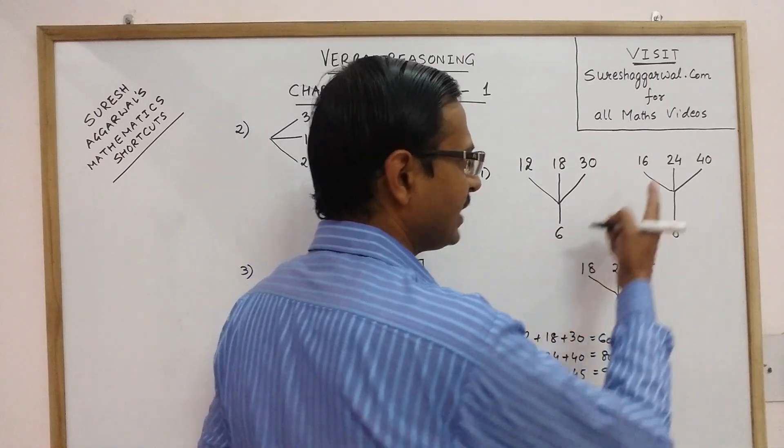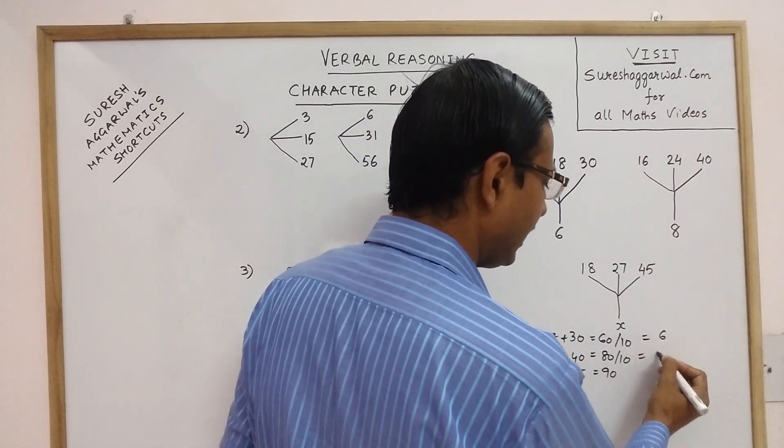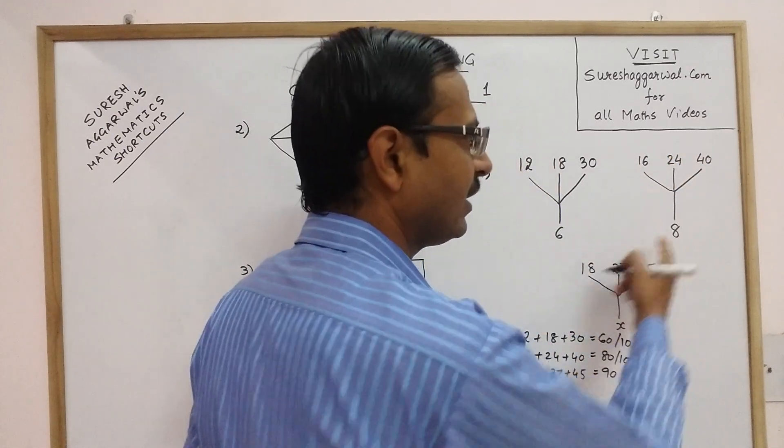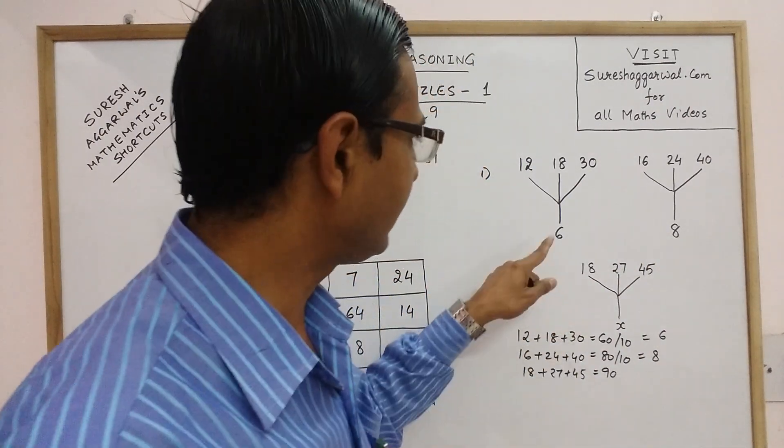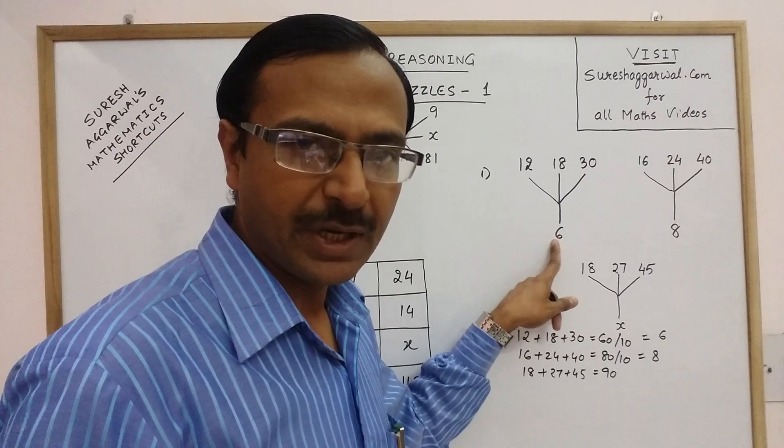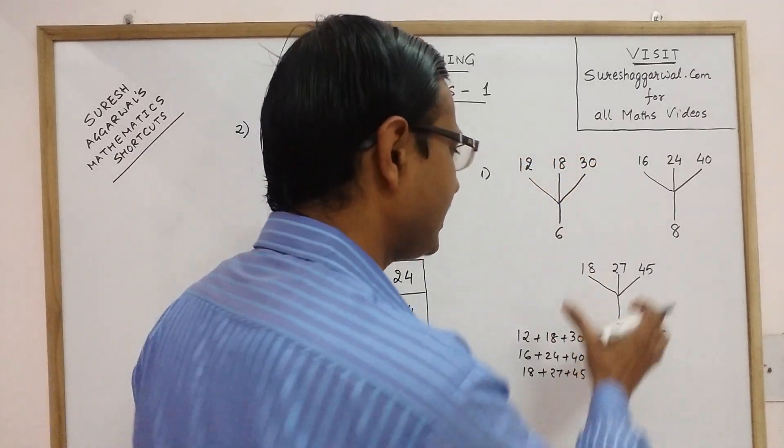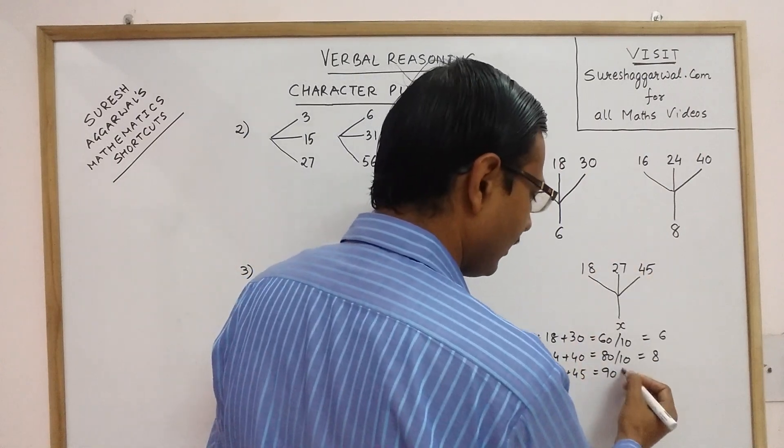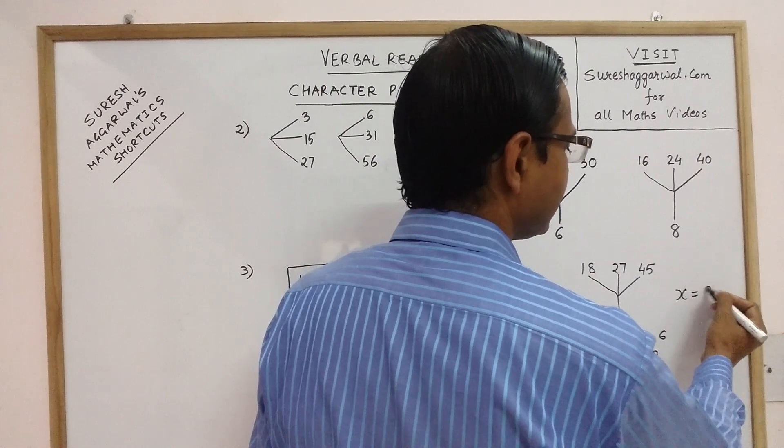Let us see whether this applies here or not. See, the total of the three numbers here is 80 and we divide by 10, you get 8, which is the number here. And now we have found out the rule that the number at the bottom is obtained by dividing by 10 the sum of these three numbers. So the sum of these three numbers is 90, so if you divide it by 10, you get 9. So your value of x is 9.